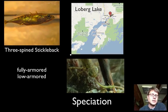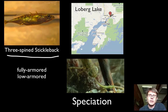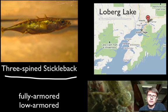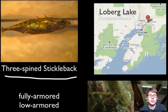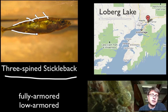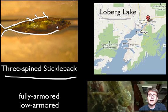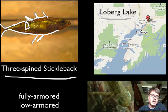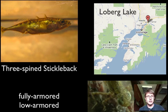Let's start with speciation using a real example: the three-spined stickleback, studied in Loberg Lake near Wasilla, Alaska. There are two phenotypes: the low armored stickleback found in fresh water, and the fully armored marine stickleback that spends part of its life in the ocean and has larger spikes, additional spikes, and plates along its sides.